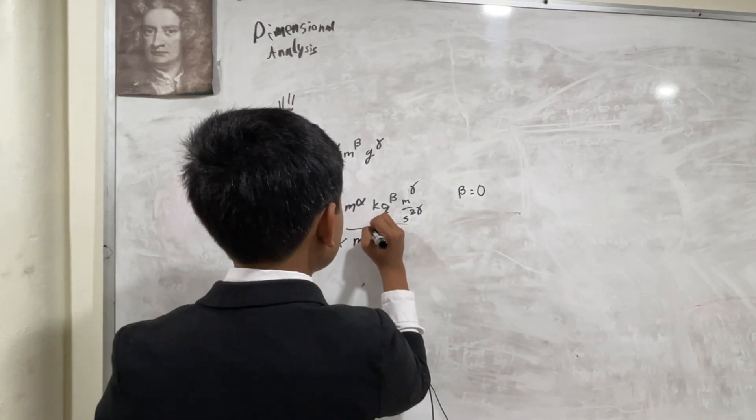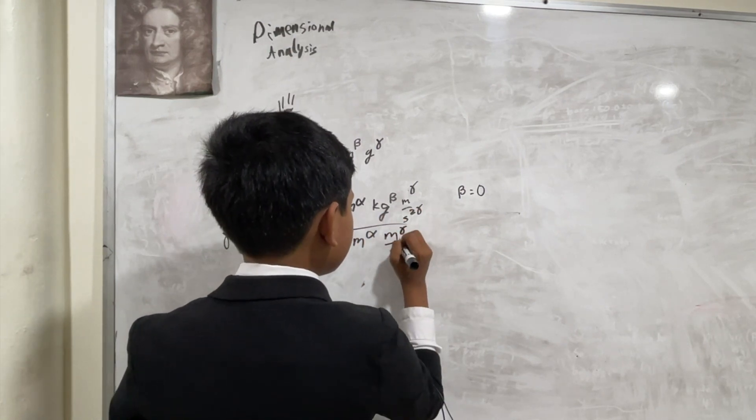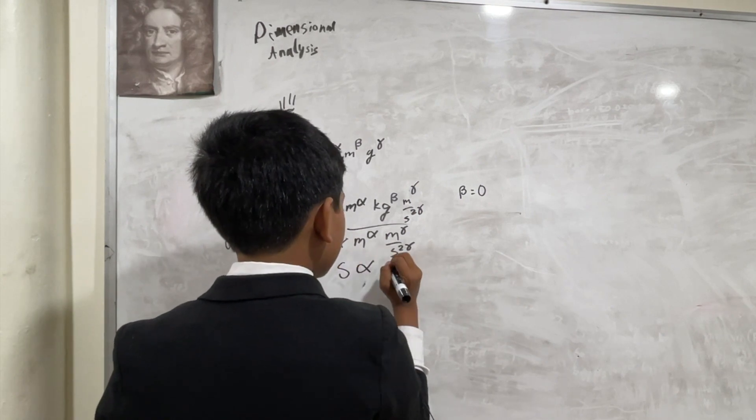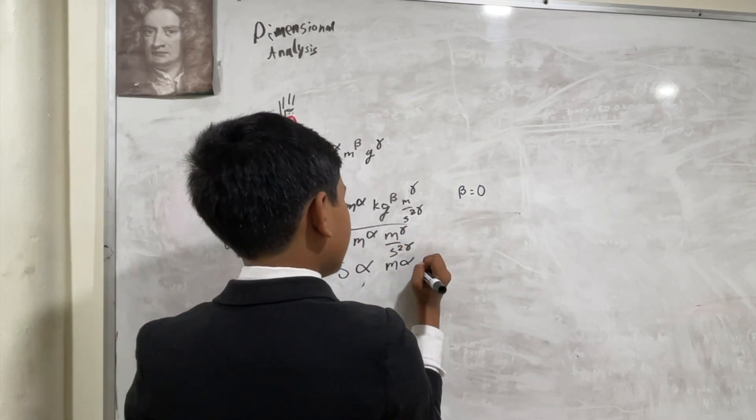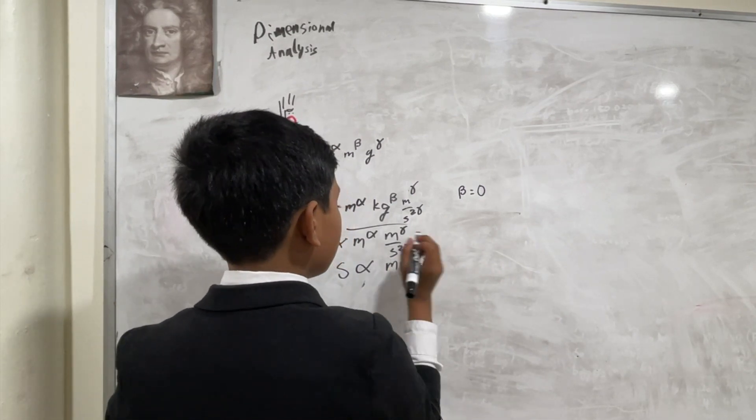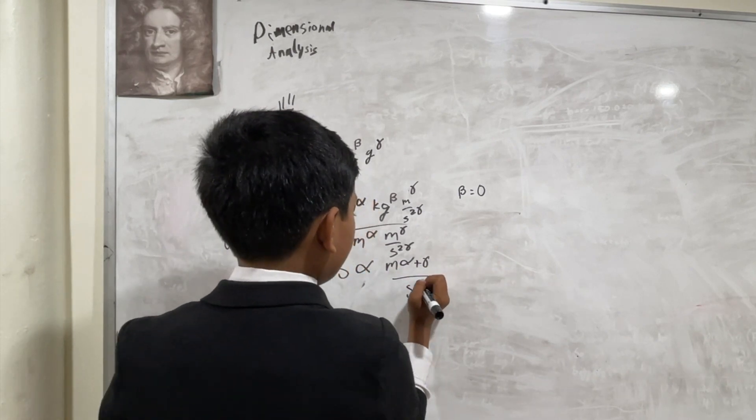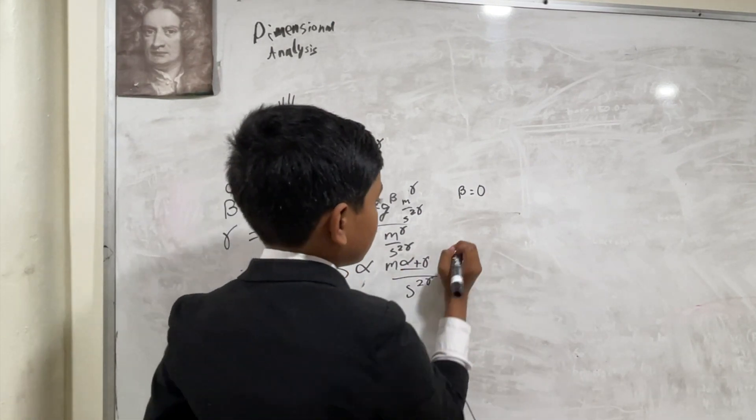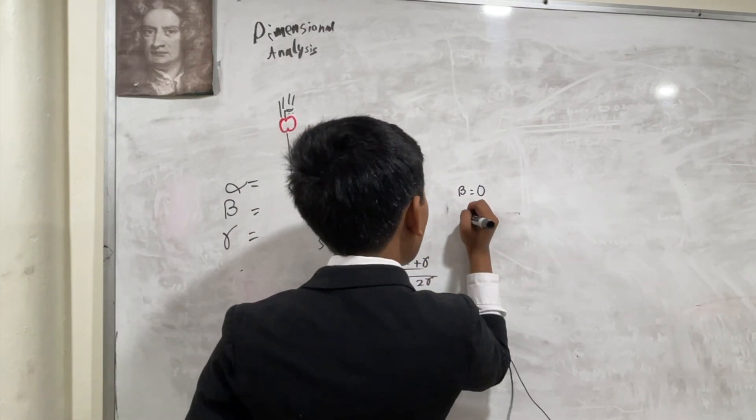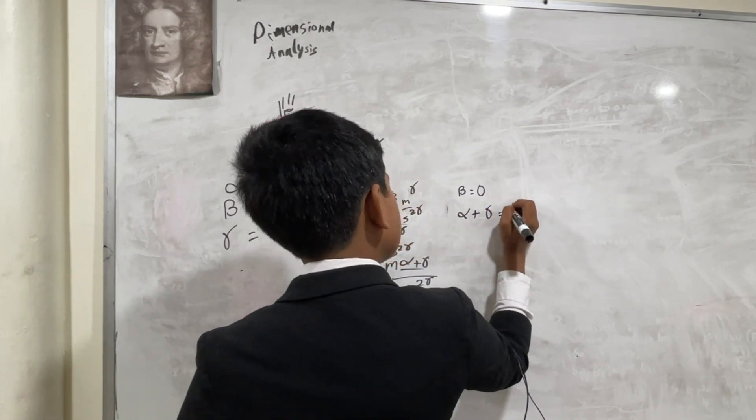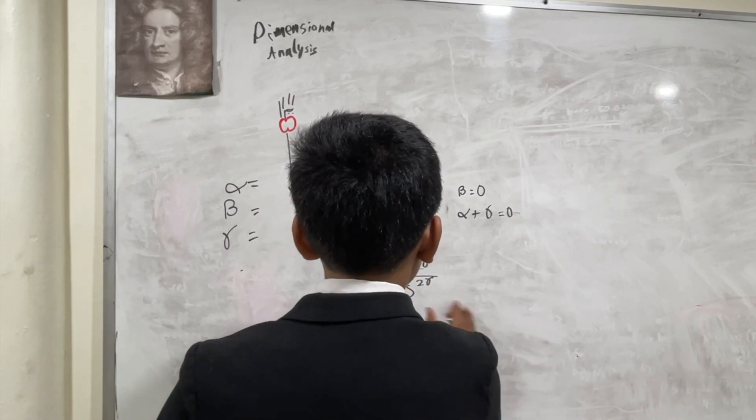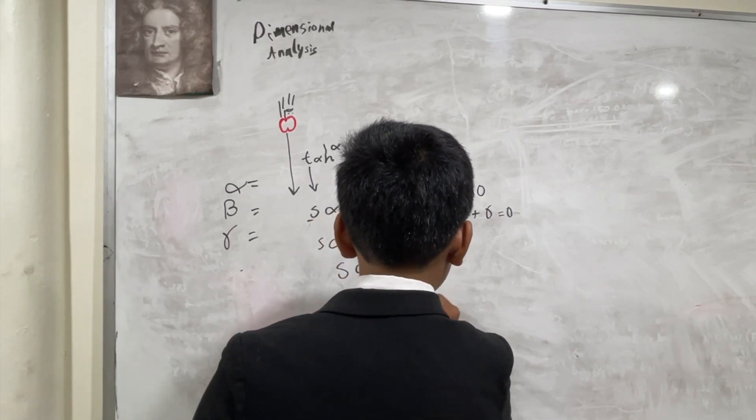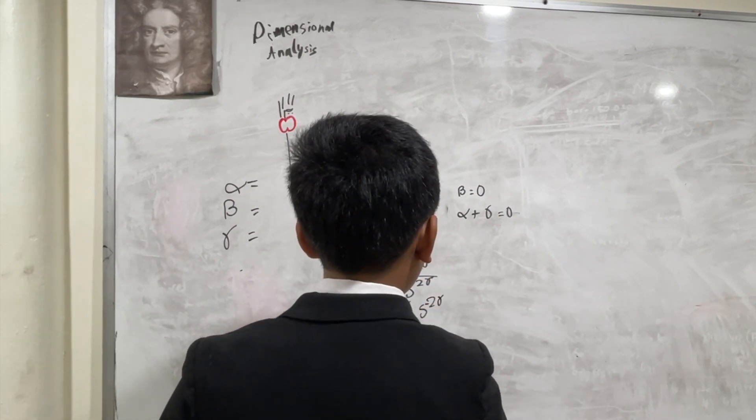So, now, we just have this. So, this is alpha plus sideways alpha. So, that means that we have m to the alpha plus sideways alpha, all over seconds to the two times sideways alpha. So, now, since we don't have meters on the left side, it's gotta go. So, alpha plus sideways alpha also has to be equal to zero. So, that means that seconds must be proportional to the negative two sideways alpha.